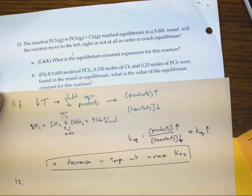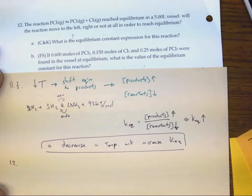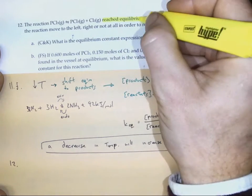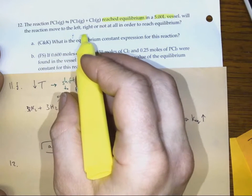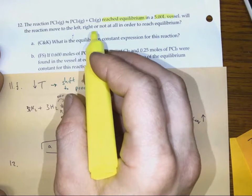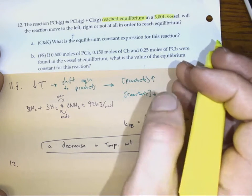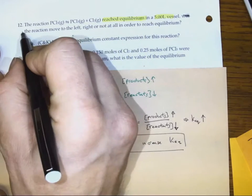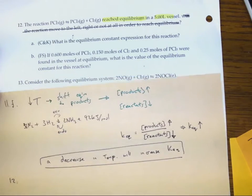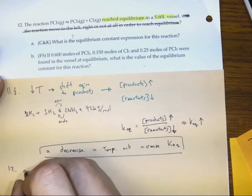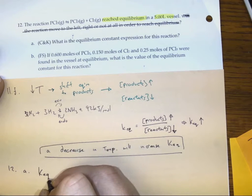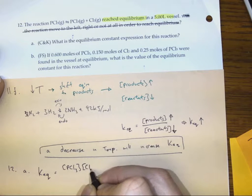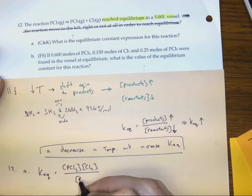Question 12: we have a reaction that has reached equilibrium in a 5-liter vessel. Question 12A asks us to write the equilibrium constant expression. The expression is the concentration of the products — PCl₃ — over the concentration of our reactants.